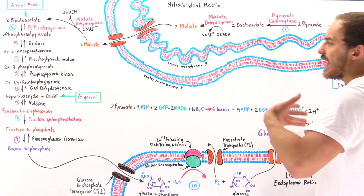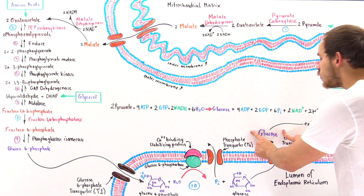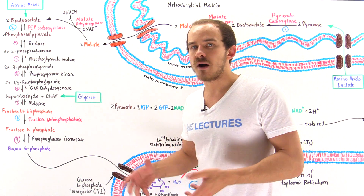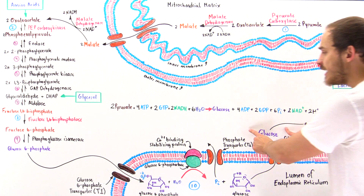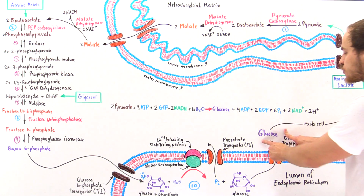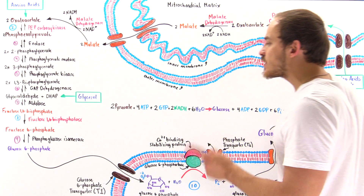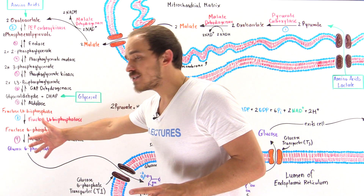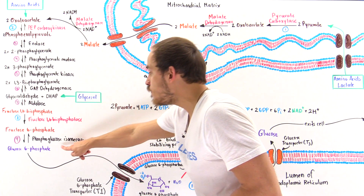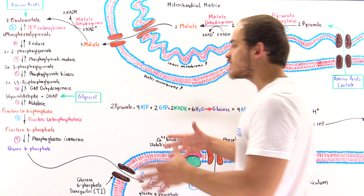Once the free glucose is formed, and assuming low blood glucose levels, that glucose can easily leave the cell via special membrane glucose transporters. The key difference between glucose 6-phosphate and glucose is that glucose 6-phosphate, due to its phosphate group, cannot leave the cell. This process in liver cells removes that phosphoryl group that would otherwise trap glucose inside.